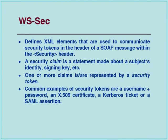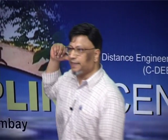A security claim is a statement made about a subject's identity, signing key, etc., and one or more claims are represented by a security token. WS-Security specifies what are the different tokens that can be included in the SOAP header and their format. One example token is the X.509 certificate - you can include your entire certificate inside, or a pointer URI to where the certificate is located.